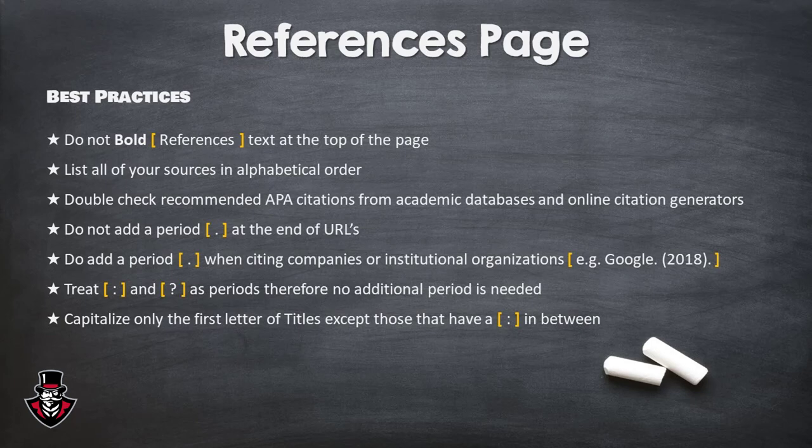Double-check recommended APA citations from academic databases and online citation generators, as they could be wrong. Do not add a period at the end of URLs. Do add a period when citing companies or institutional organizations.